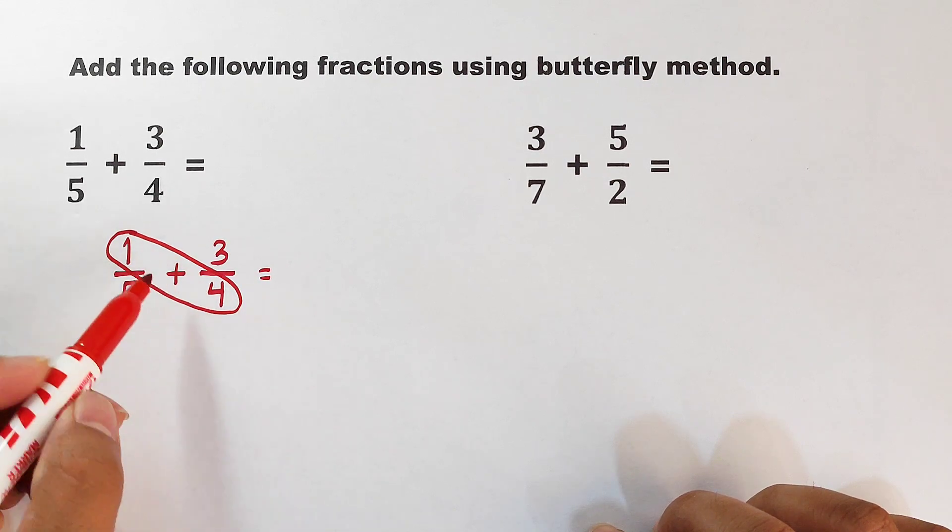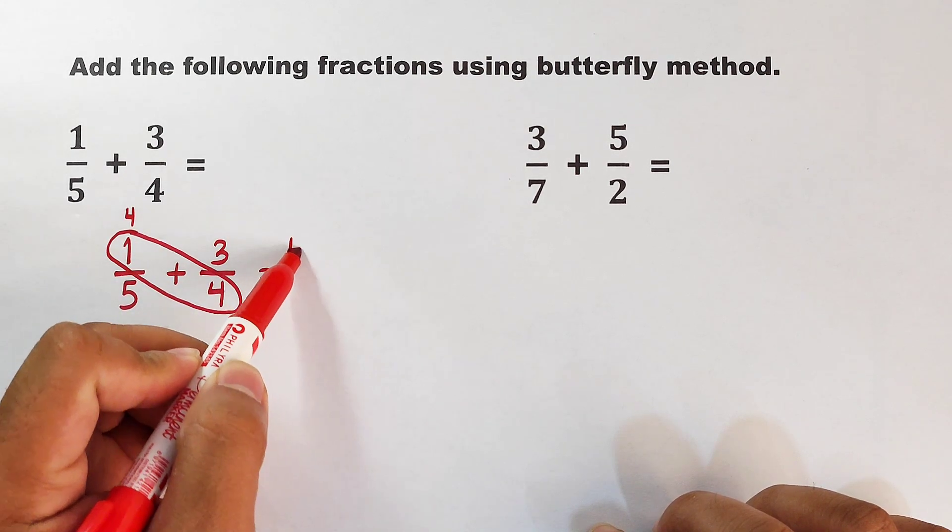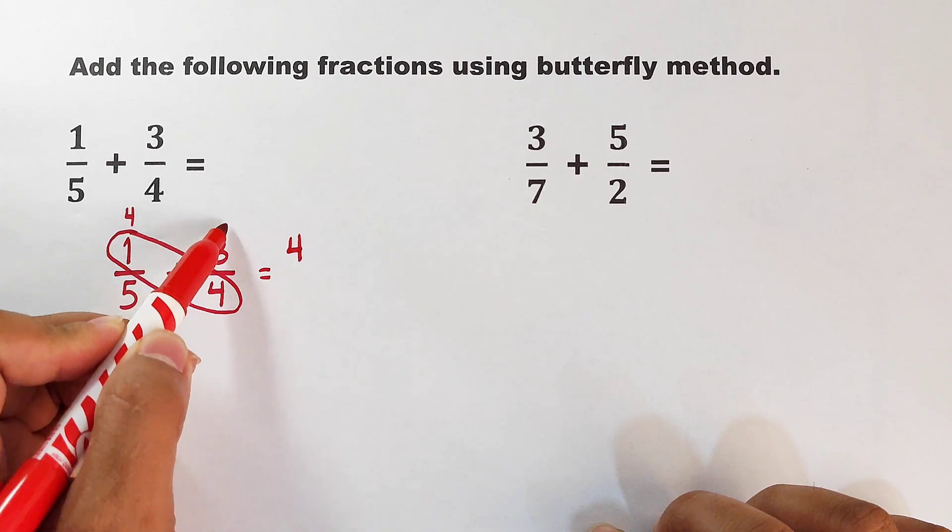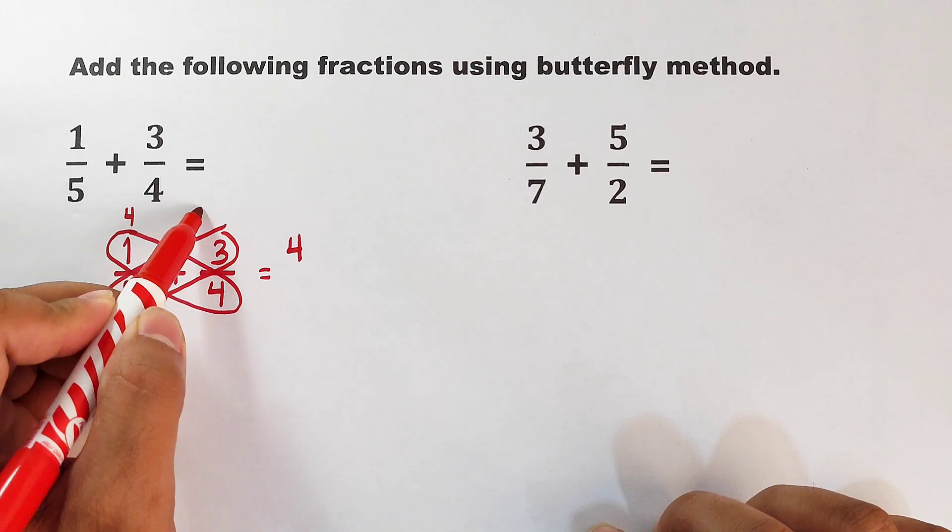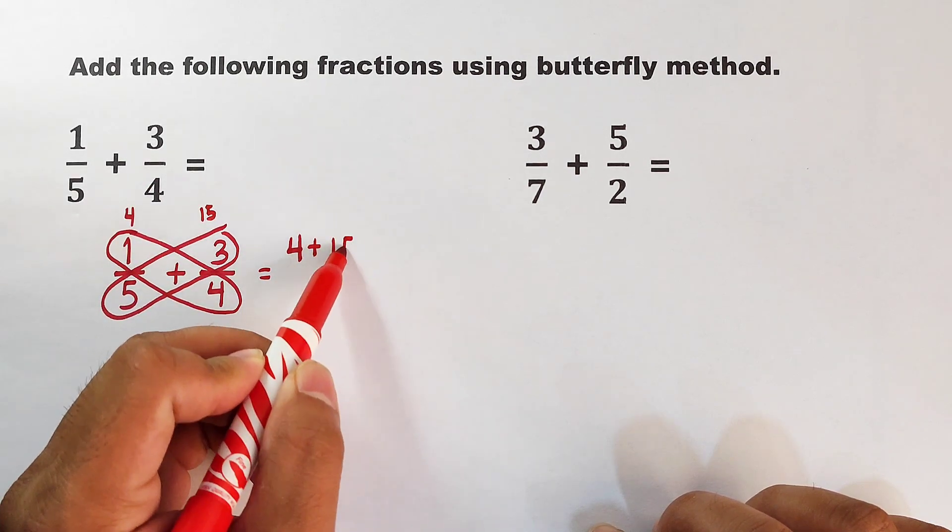these numbers: 1 times 4, that would be equal to 4. That will be your first numerator here. Next, multiply these numbers: we have 5 times 3, that would be 15. So this is plus 15.